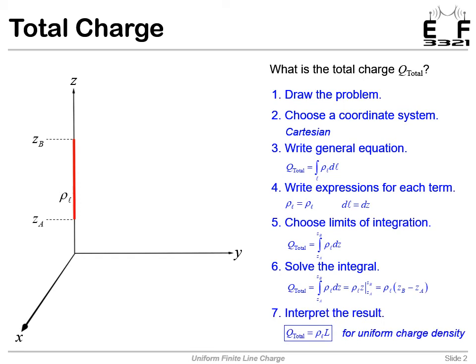So our final answer, we can just write as rho L times length. And that is valid for a uniform charge density. If it was not uniform, the rho L would have had to stay inside the integral, and our answer would be different.